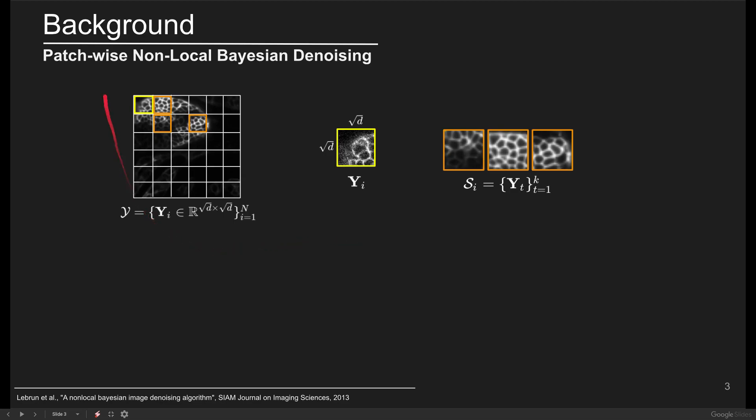Let's consider a given input as a bag of n small patches. For each patch, like the yellow one here, we can collect a set of most similar patches like the ones highlighted with orange borders.